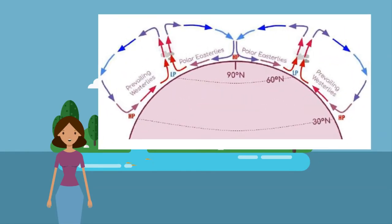Now let's move on to low rainfall, or arid, areas. If a region is described as arid, it means it receives very little rain, causing it to be dry. Dry air sinks at the subtropics around 30 degrees, forming an area of high pressure. Clouds do not form here because the air isn't rising, so it is very dry. This is where we find many of the world's deserts.